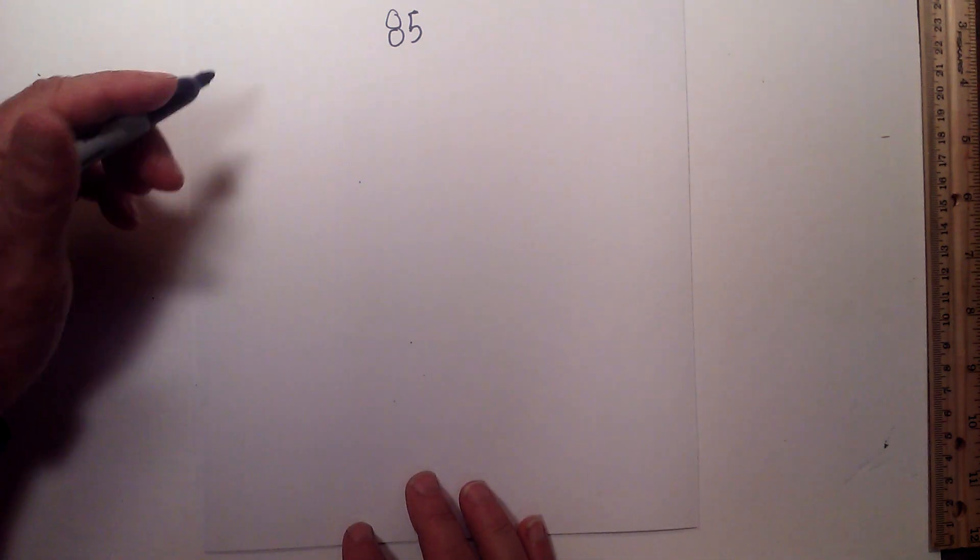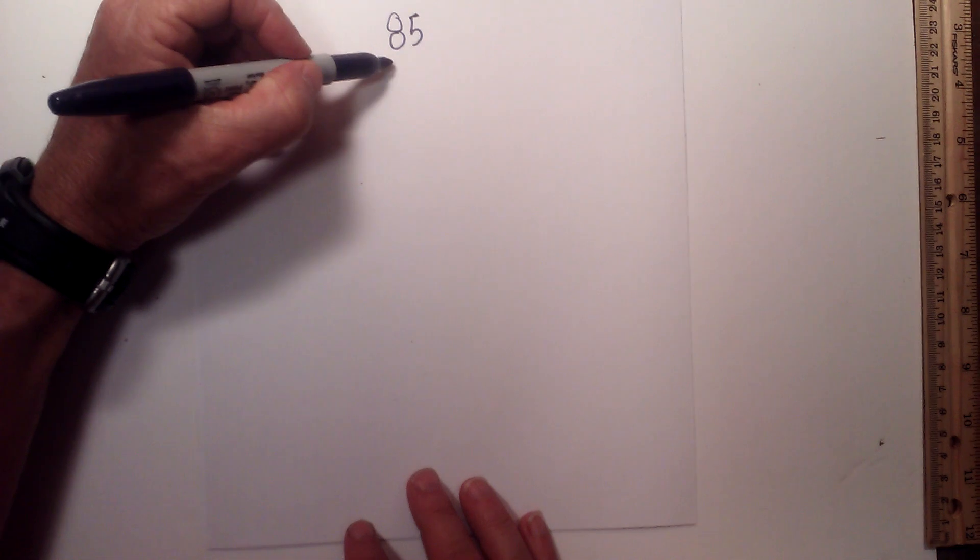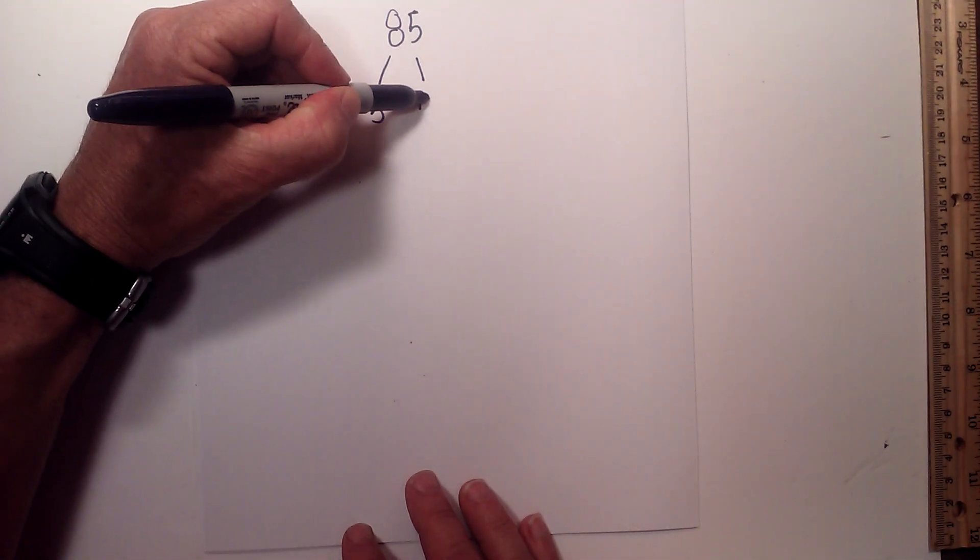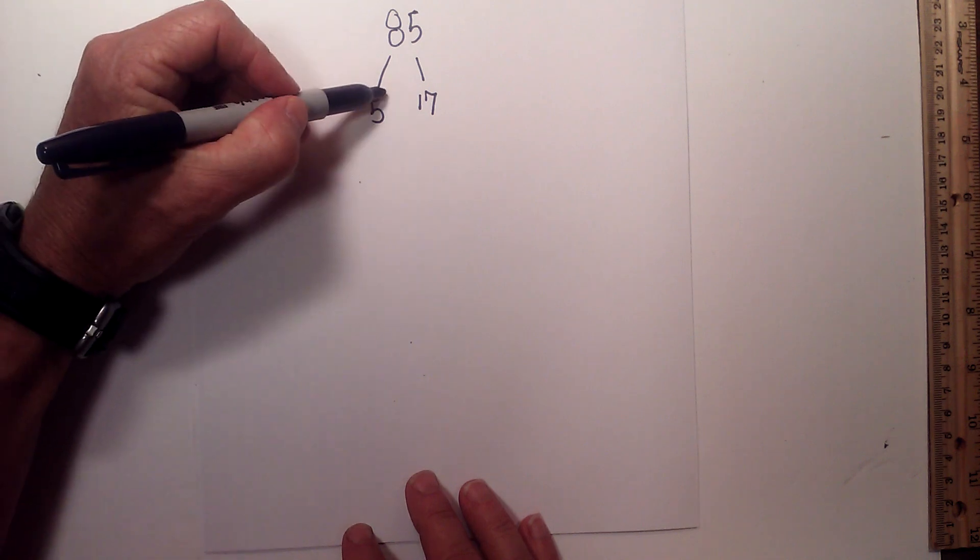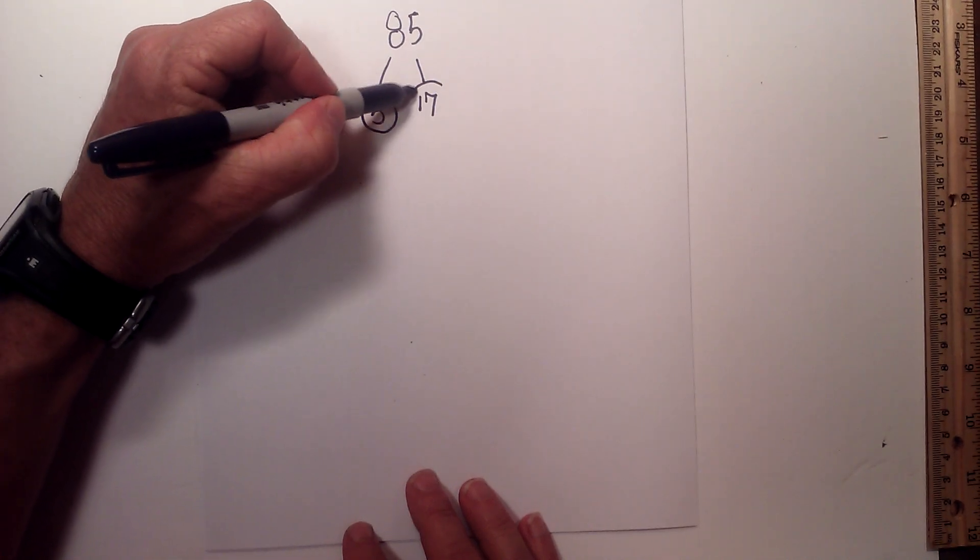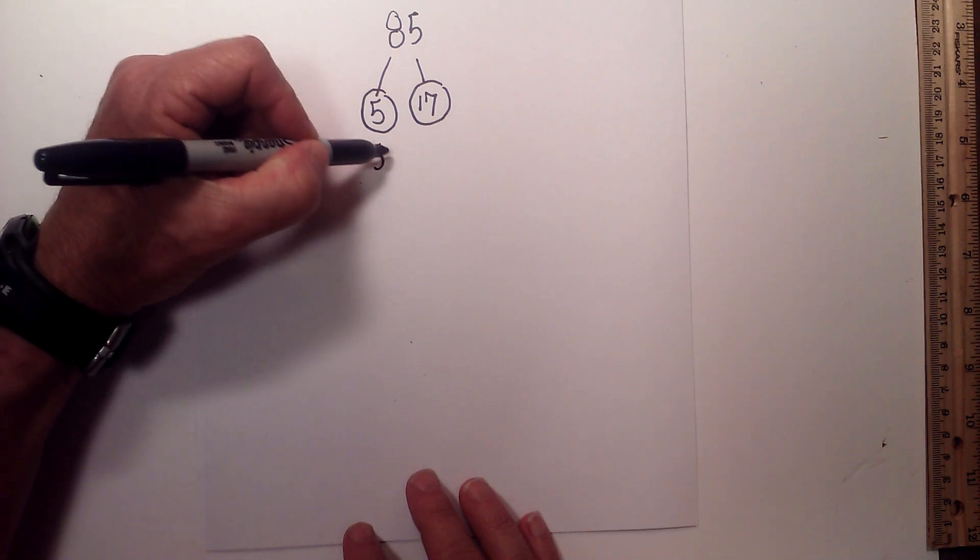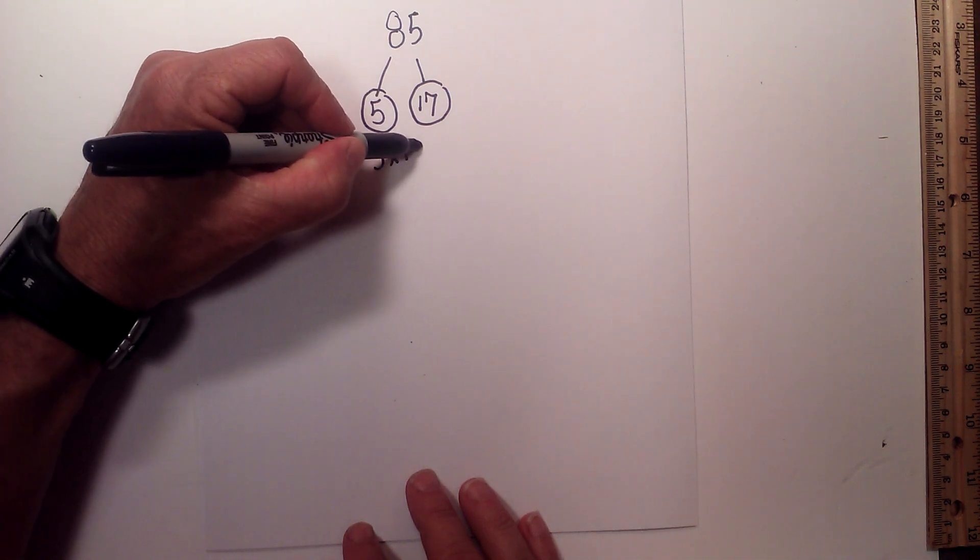Let's start with 85 first and then I'll get to 81. Okay, 85 is rather short. You just multiply 5 times 17. You will circle both of them because they are both prime. The prime factorization of 85 is 5 times 17.